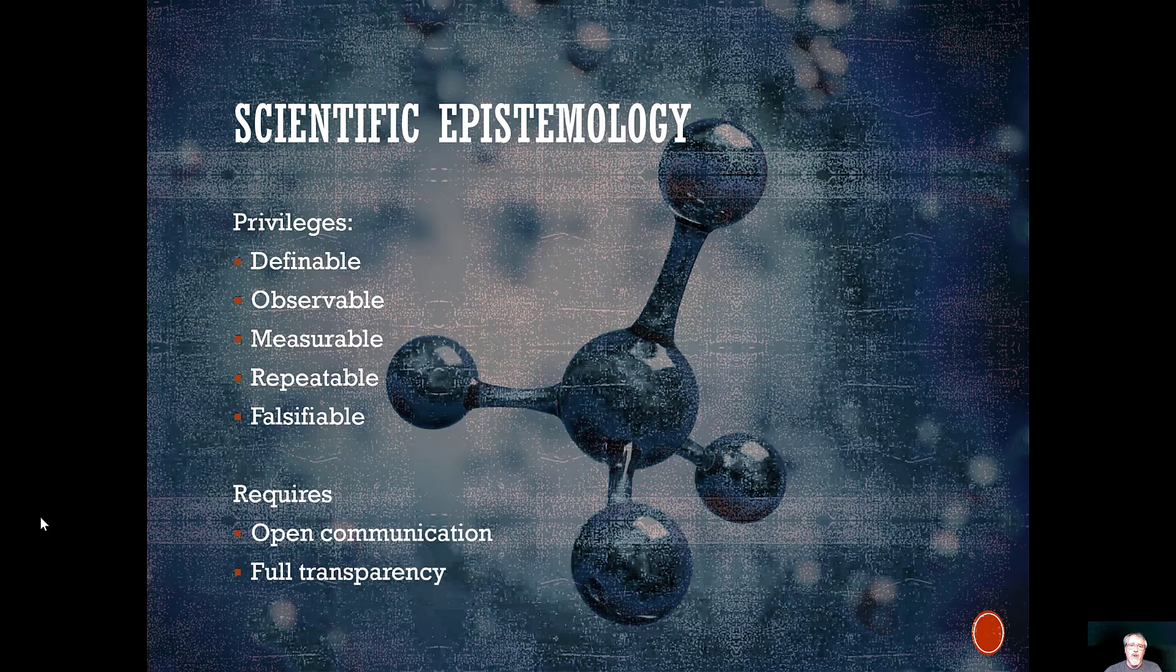Now, of course, for all of this to function on a grand scale, scientific epistemology requires open communication between researchers. And those researchers have to disclose with full transparency what it is that they've done. There's no black box. There should be no secret behind the curtain to how things work. Other scientists have to be able to fully assess each individual study. And in order to do that, they need to know exactly how that study was done.